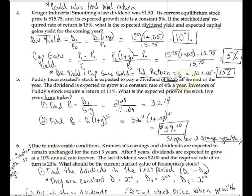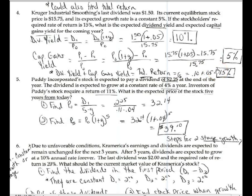You learned about R sub S as part of the Gordon model, and you can also solve for R sub S by flipping the model around. R sub S, the required rate of return, is also expressed as total return. It equals the dividend yield plus the capital gains yield. In a situation like this, you just put together your dividend yield and capital gains yield — 10% plus 5% — and found the total return of 15%.